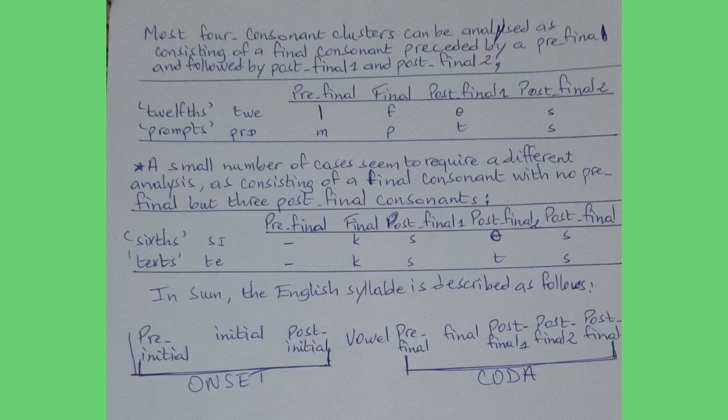Most four consonant clusters can be analyzed as consisting of a final consonant preceded by a pre-final and followed by post-final one and post-final two. Examples: 'twelfths' — pre-final /l/, final /f/, post-final one /θ/, post-final two /s/. In 'prompts' — pre-final /m/, final /p/, post-final one /t/, post-final two /s/.